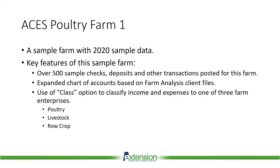If we're going to discuss farm accounting, we need a sample farm QuickBooks file, so we created the ACES Poultry Farm Number One. The key features of this sample farm include over 500 checks, deposits, and other transactions posted for the 2020 crop year, an expanded chart of accounts based on the standard farm analysis client file setup, and use of the class option to classify income and expenses to one of three farm enterprises: poultry, livestock, and row crop. This class feature can really help us see which farm enterprises make the most money and which need to be reviewed for possible changes.